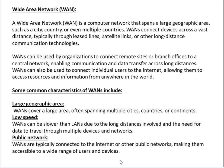WANs allow users to access resources and information from anywhere in the world. Some common characteristics of WANs include large geographic area — WANs cover a large area often spanning multiple cities, countries, or continents — and low speed, as WANs can be slower than LANs due to the long distances involved.